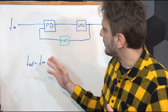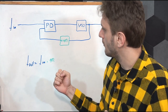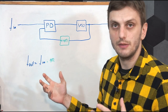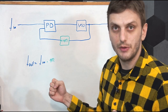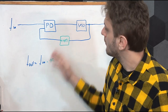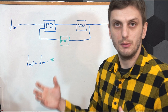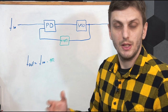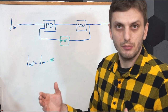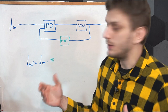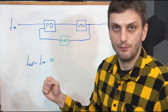Secondly, turning to the phase detector — because we can have such wide frequency variations, this phase detector needs to be able to handle large frequency differences on the input, so even multiples of our initial frequency.